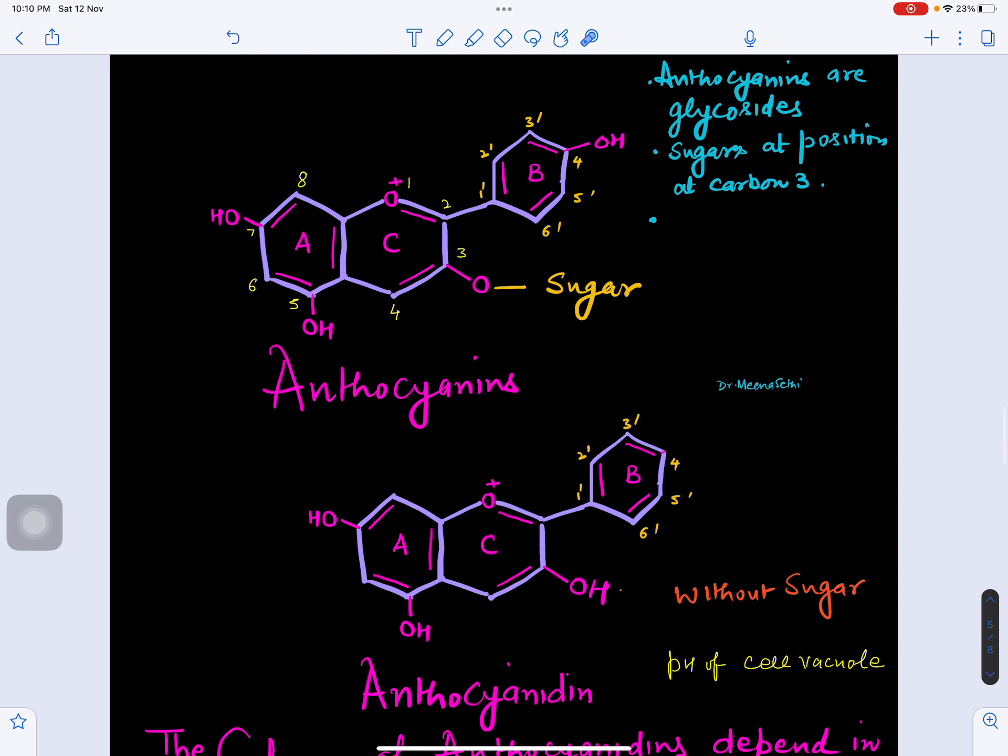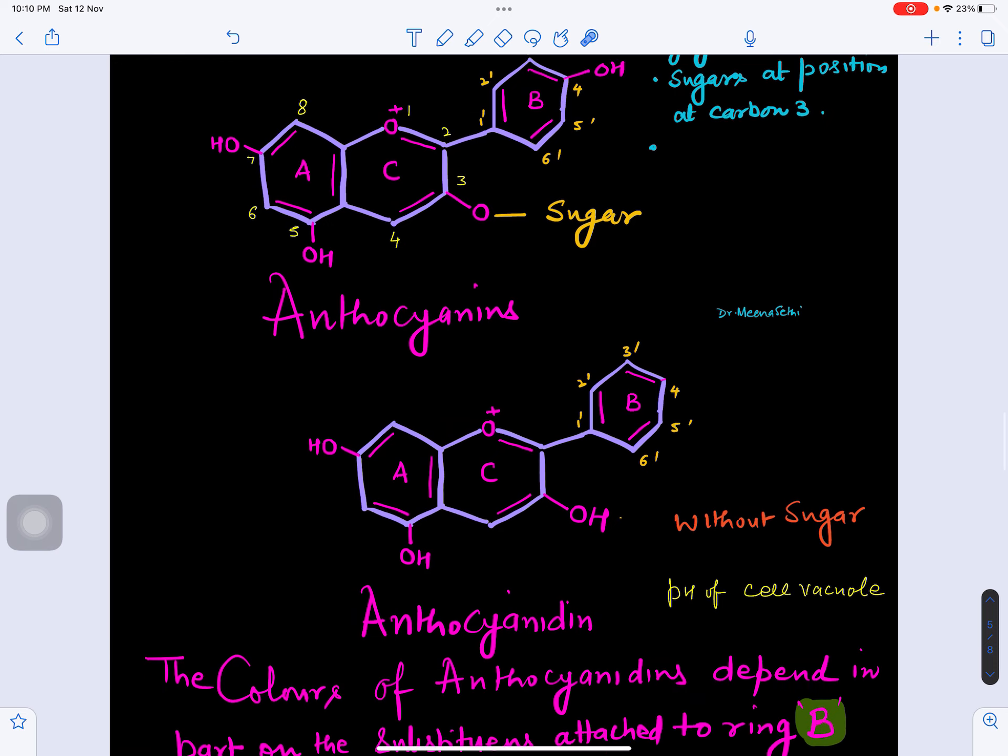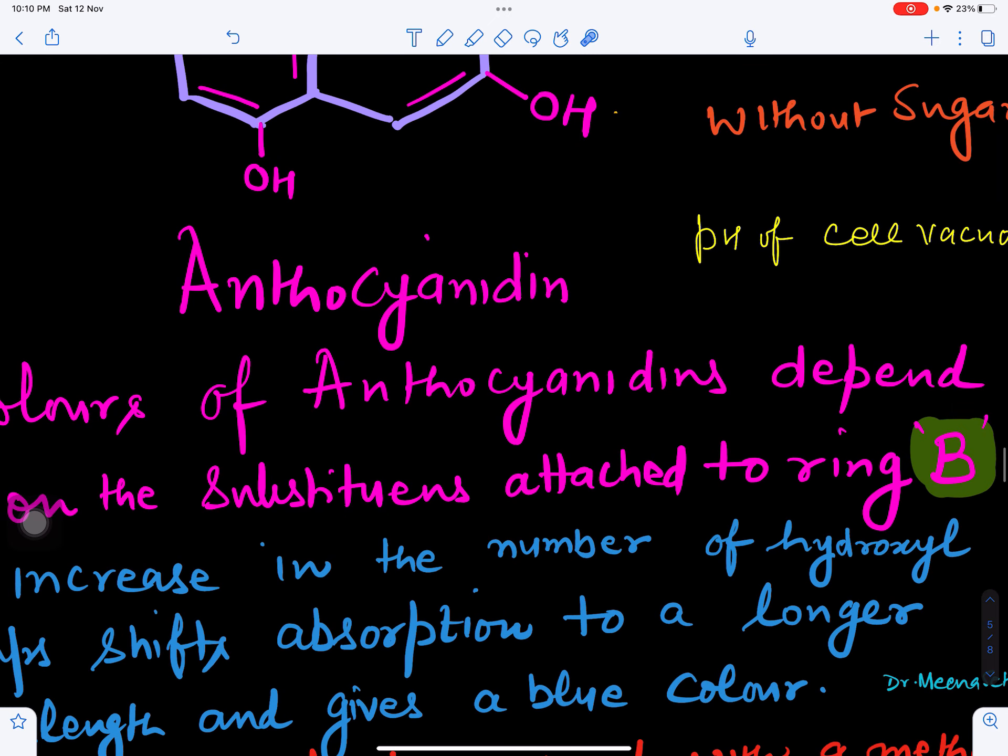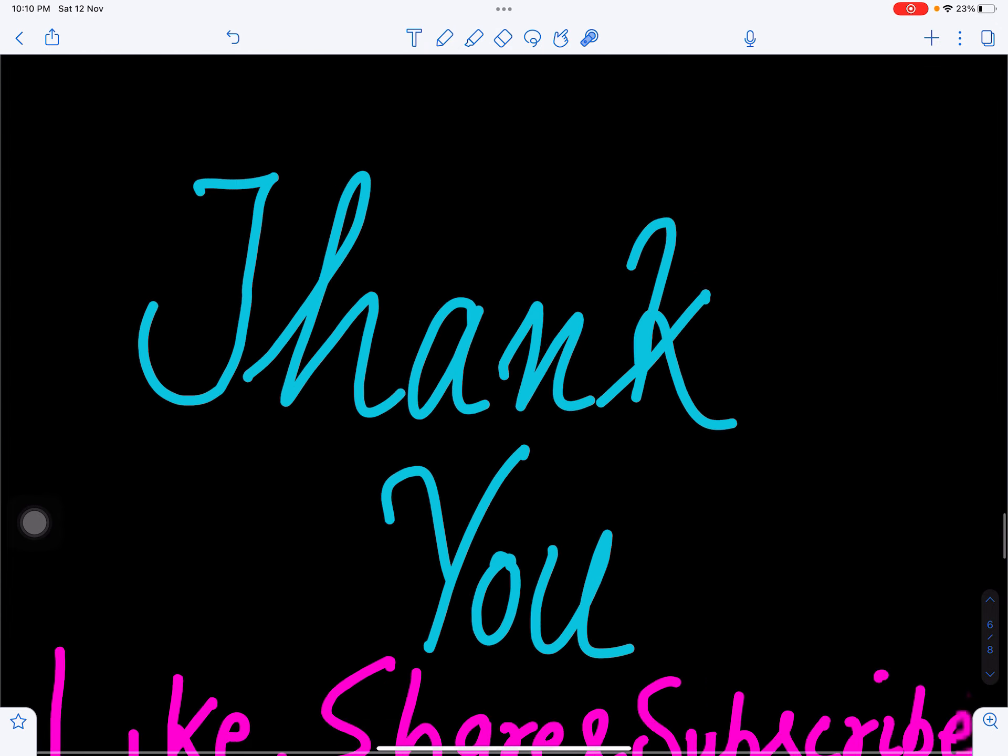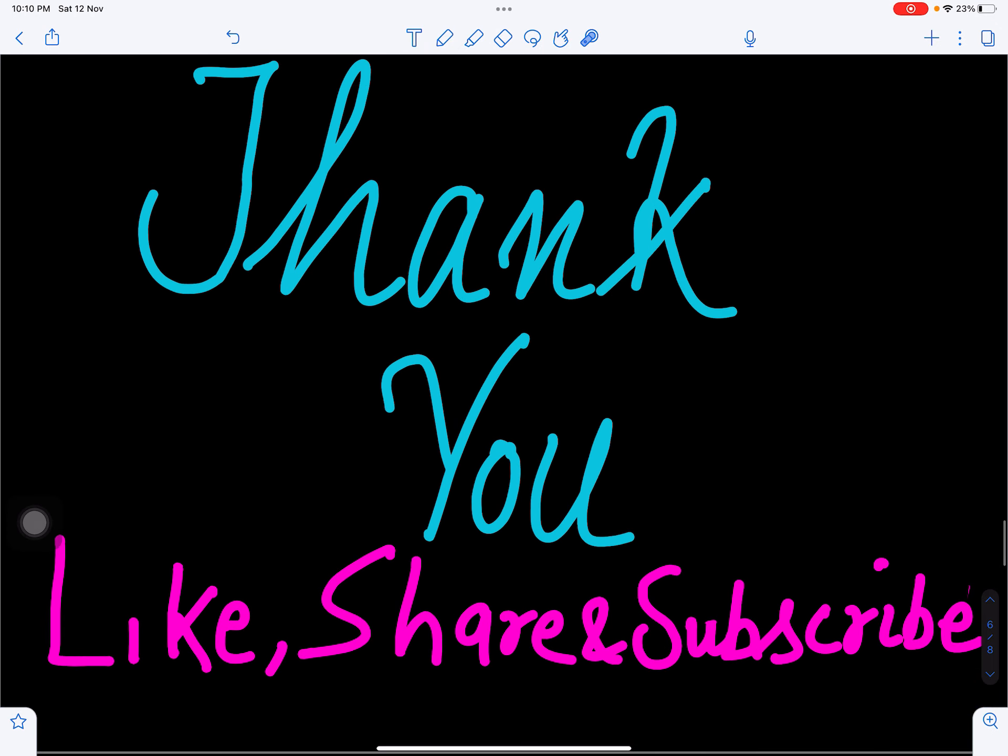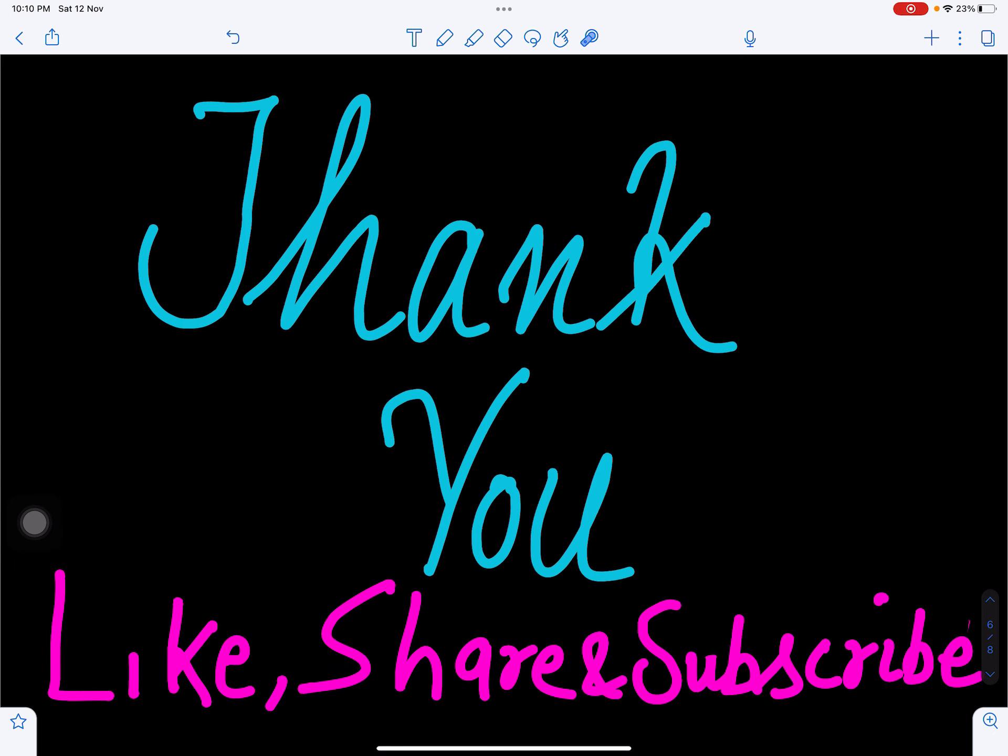In that way, depending upon the side chains in the anthocyanin pigments, color is dependent. If more hydroxyl, they will shift toward the bluish coloration, and if there are more methoxyl, they will shift toward the reddish coloration. So this is about how anthocyanins provide different colors to the flower.